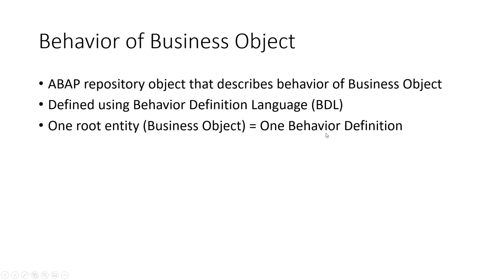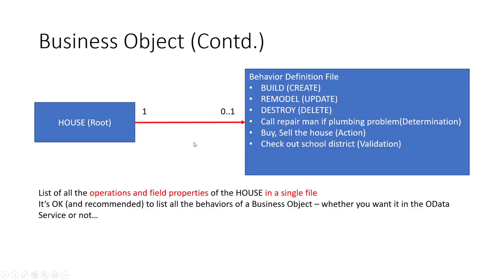For example, the house business object can have many behaviors. You can build a house — that's a create operation. You can remodel the house — that's an update. You can destroy it — that's a delete. These are all CRUD operations: create, update, and delete on this business object.